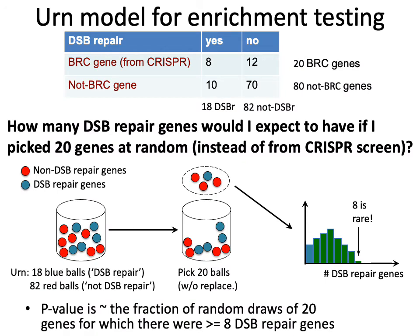Here is a concrete illustration of how enrichment testing works, carried out by what's known as the Fisher's Exact Test or similarly the Hypergeometric Test. Suppose you have a genome with 100 genes and you've done a CRISPR knockout screen identifying 20 of those genes as potential breast cancer genes. You go to a database like Gene Ontology and find a pathway of interest — say, double-stranded break repair genes — and ask: of the 20 breast cancer genes, is there a large number also annotated as DSB repair genes?